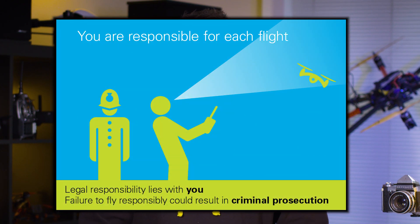Number five: you are responsible for each flight and legal responsibility lies with you. Failure to fly responsibly could result in criminal prosecution. The drone pilot is responsible legally for the actions of that drone. If you're doing something you shouldn't be with your drone, or flying somewhere you shouldn't be, legal responsibility lies with the pilot and it's the pilot that could be prosecuted.